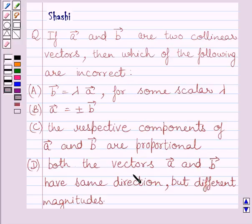D, both the vectors, vector A and vector B have same direction but different magnitudes.